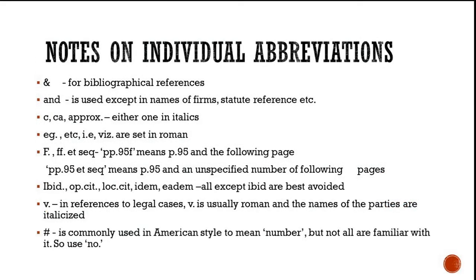Let's talk about individual abbreviations. The ampersand (&) is used for bibliographical references; in all other cases we use 'and.' There is also an exception: whenever you have names of firms or statute references — for example, Samson and Samson — when referring to the names of firms we use the ampersand; otherwise we use 'and.'